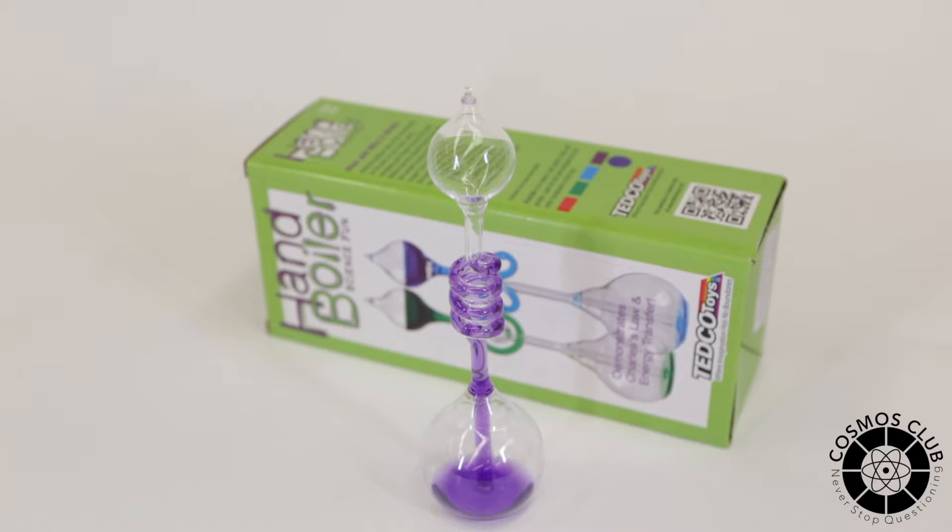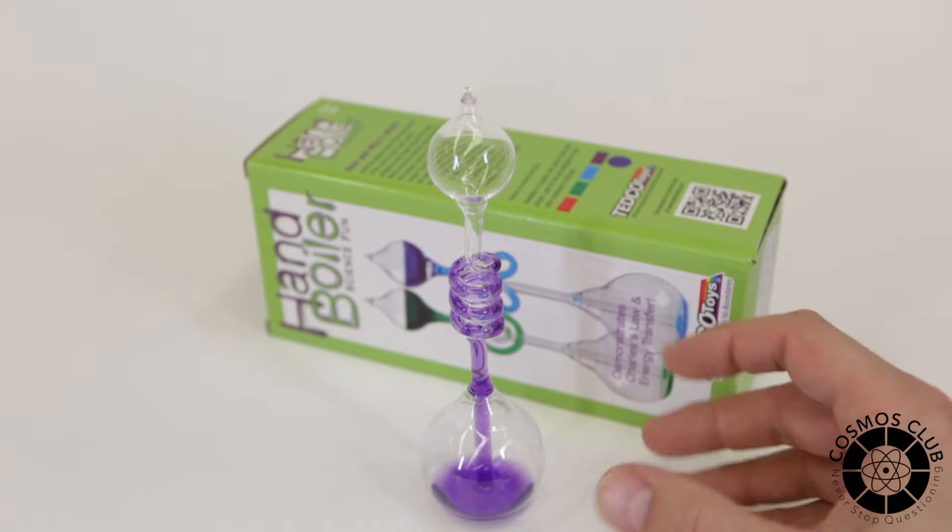Here we have a hand boiler, and it's a fun little experiment. We're going to do exactly what the name suggests - we're going to boil this with our hand. Now that's got to be pretty hot to boil it. It's not exactly going to boil it in the sense that we're going to turn this liquid into a vapor, but it's going to look very similar. Let's try it out and see what's going on.